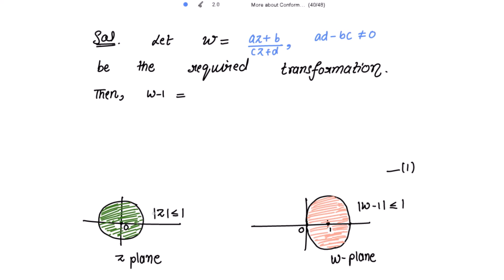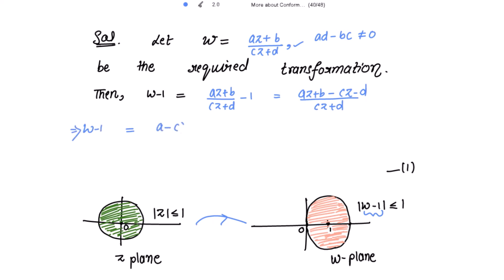Because we need to map |z| ≤ 1 onto |w - 1| ≤ 1, let's consider w - 1 first. So w - 1 = (az + b)/(cz + d) - 1 = (az + b - cz - d)/(cz + d). Taking z common from the numerator, we get w - 1 = [(a - c)z + (b - d)] / (cz + d).